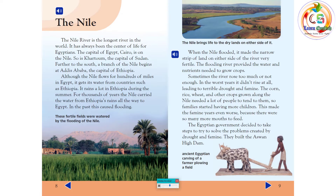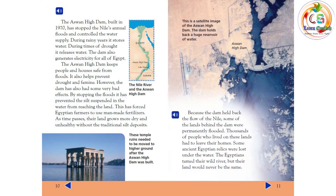The corn, rice, wheat, and other crops grown along the Nile needed a lot of people to tend to them, so families started having more children. This made the famine years even worse, because there were so many more mouths to feed. The Egyptian government decided to take steps to solve the problems created by drought and famine. The Aswan High Dam, built in 1970, stopped the Nile's annual floods and controlled the water supply.